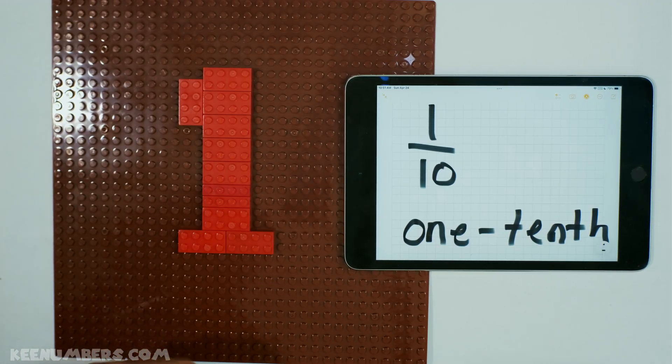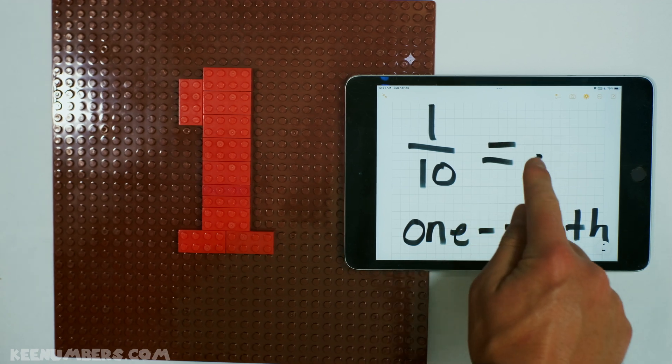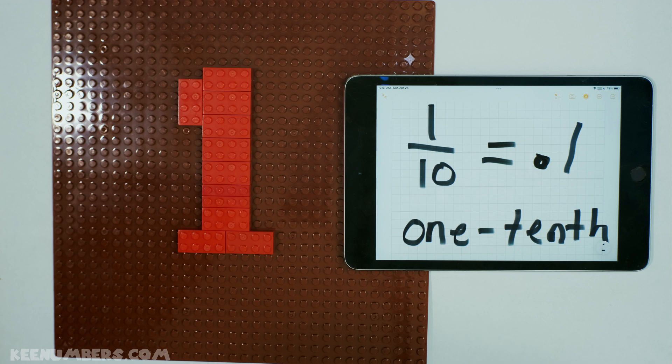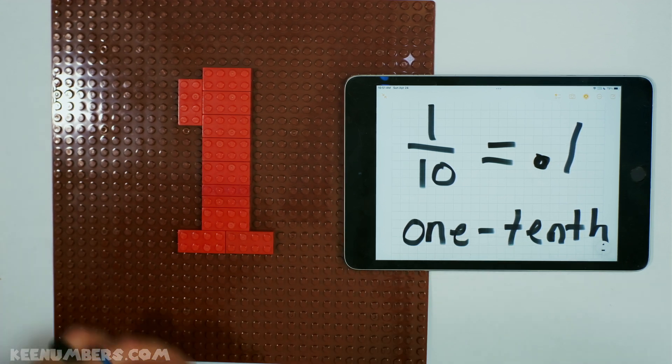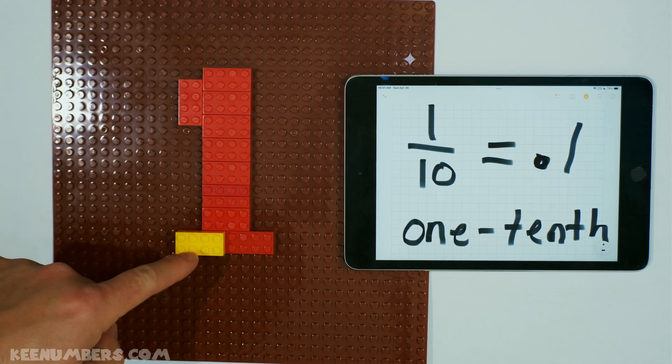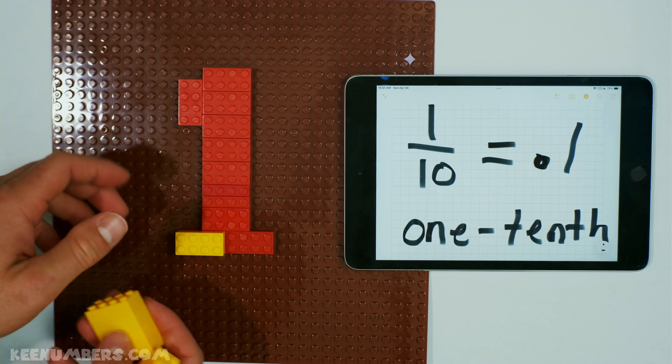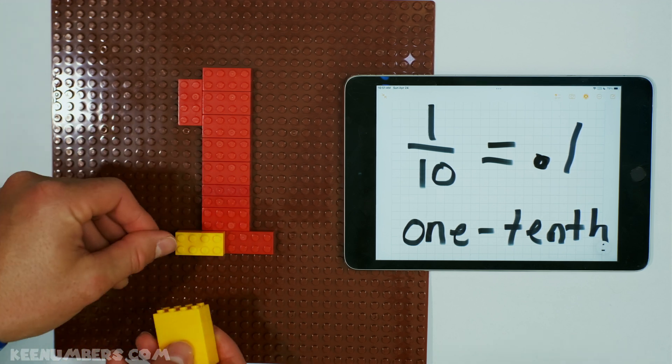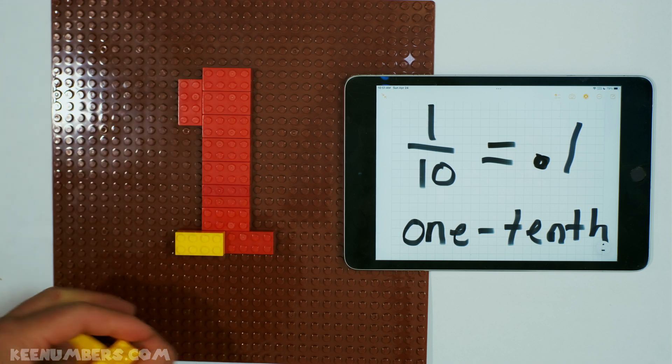Let's talk about 1 tenth. We can say 0.1 when we talk about 1 tenth. That is the recipe. In other words, if you want to break up 1 into 10 equal pieces, 1 tenth, that's 1 small part. You'll need 10 of these equal parts to get 1 whole.